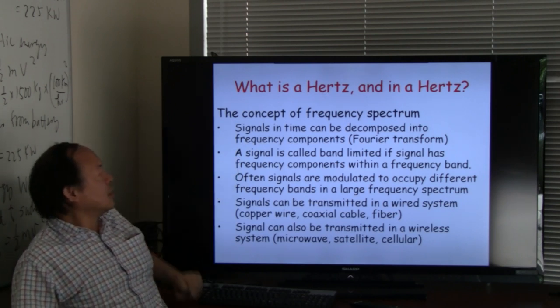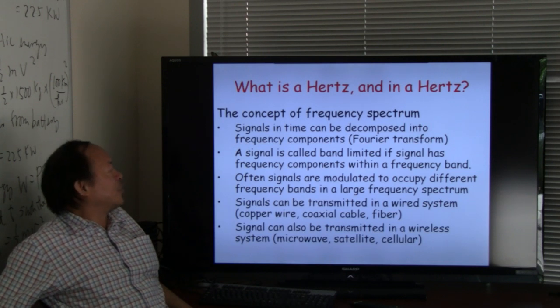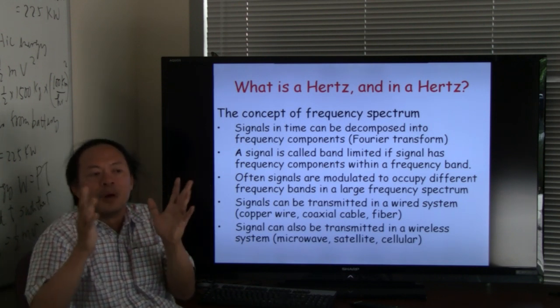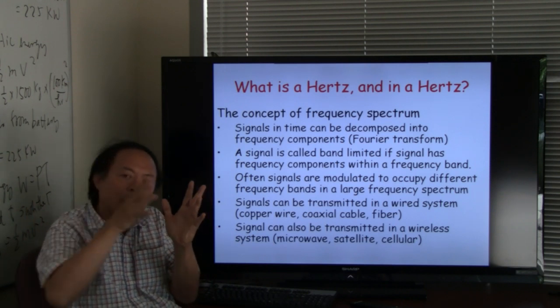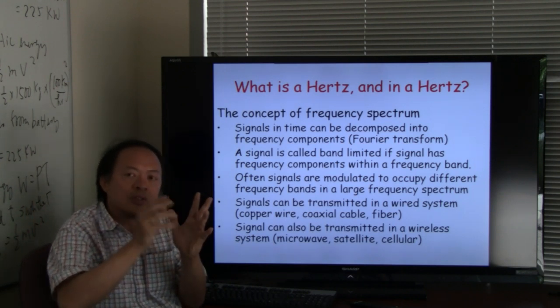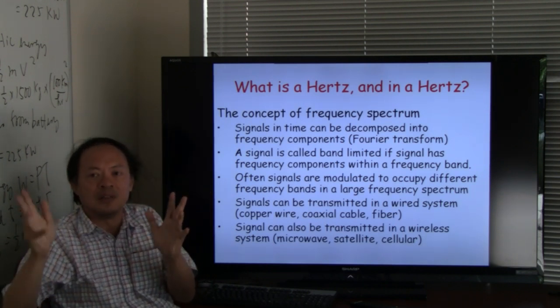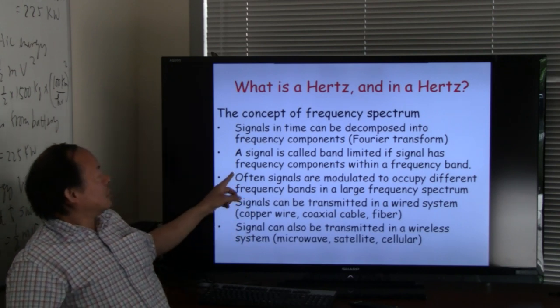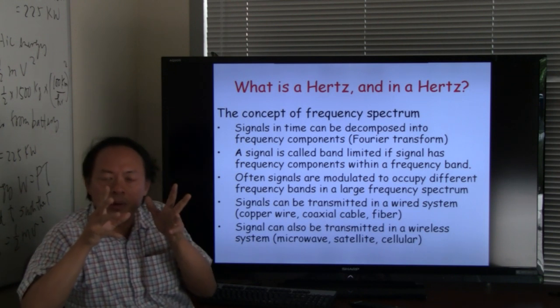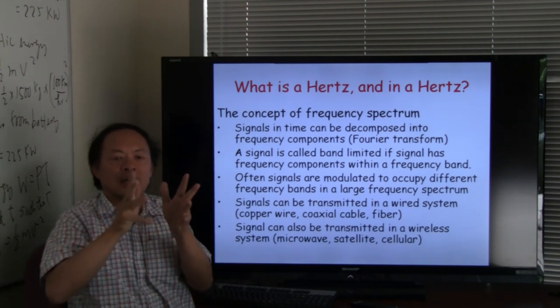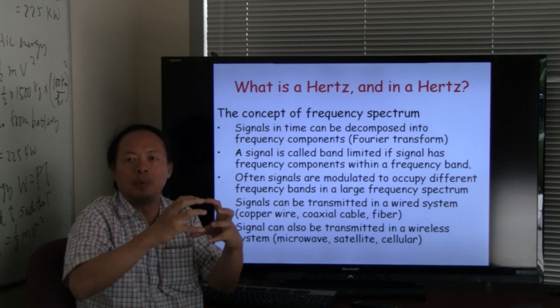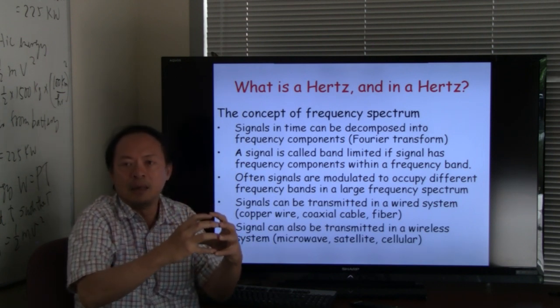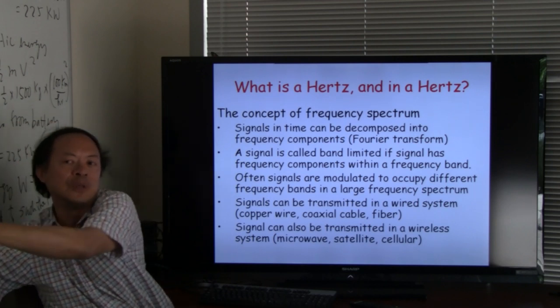We say a signal is band-limited if the signal has frequency components within a particular frequency band. It could be from 0 to 60 Hertz, so you may have some signals at 30 Hertz, 40 Hertz, 50 Hertz, and 60 Hertz. What is basic to communication is that we can move a group of signals within one frequency band into another frequency band.